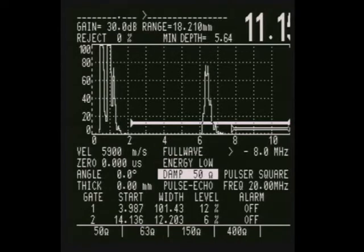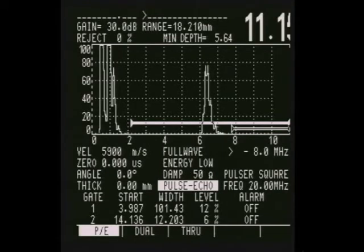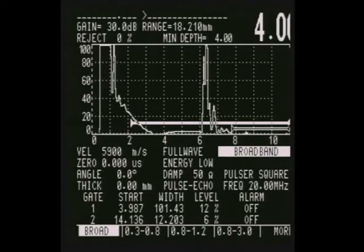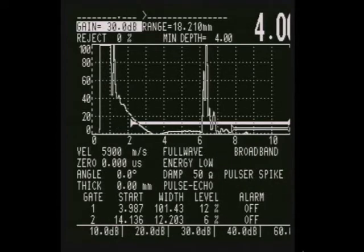Damping is at 50 ohms. Pulse echo. So we're using a single crystal here. So pulse echo is a technique to use. And I'm going to use broadband to start out with. And I'm going to get rid of that square wave. It's a totally useless thing unless you're selling an Epoch 4.